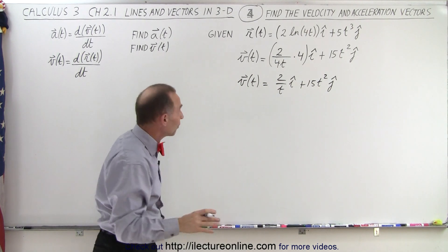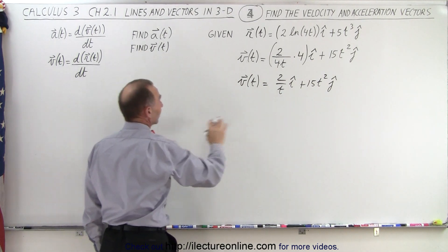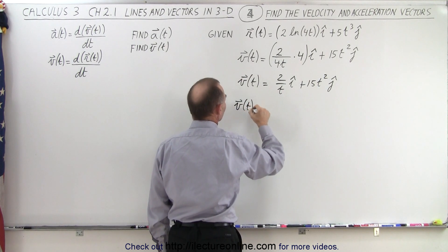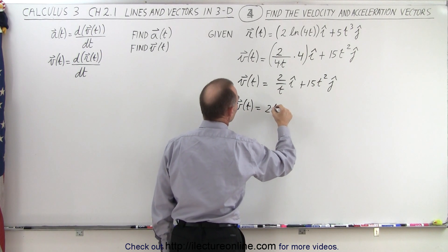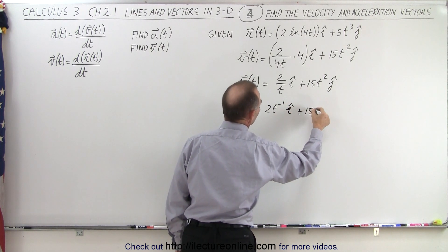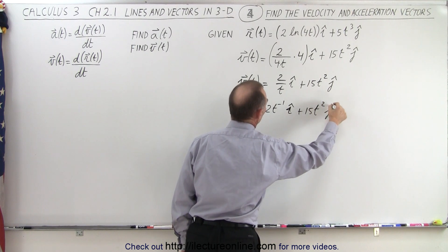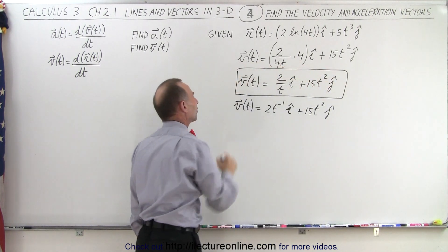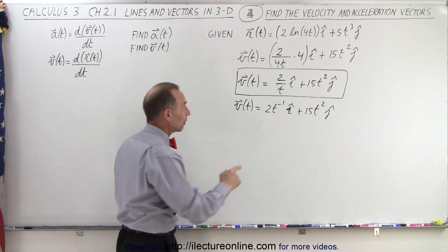And since we're going to have to take the derivative again to find the acceleration vector, we can write this as follows. The velocity vector as a function of time is equal to 2t to the minus 1 in the i direction, plus 15t squared in the j direction. So this is probably a good form of the velocity vector, but now we need to take the derivative again.